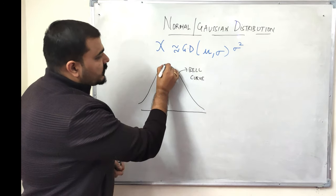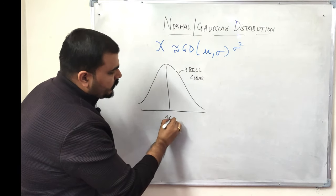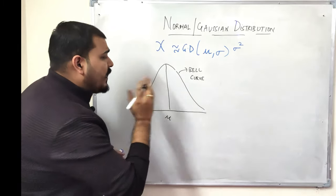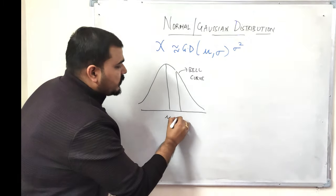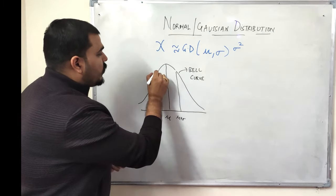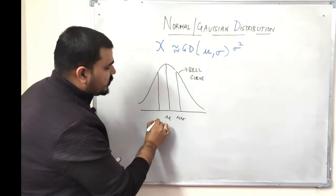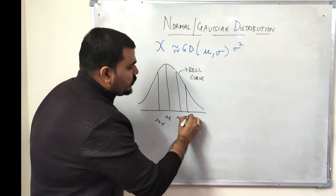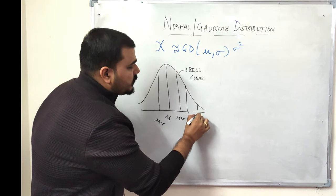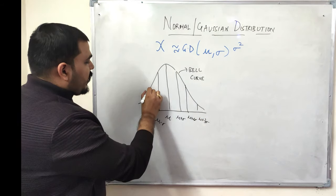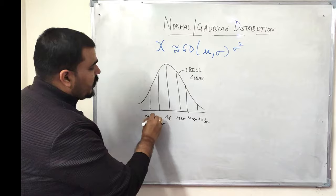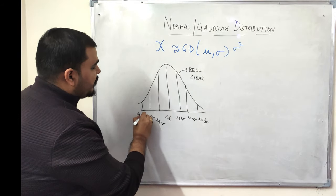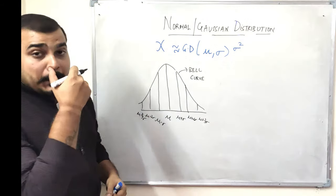Inside this curve, the central point is my median. If I go one position to the right this is mu plus sigma, if I go one position to the left this is mu minus sigma. Similarly, one more position to the right is mu plus 2 sigma, this is mu plus 3 sigma. If I go to the left, mu minus 2 sigma and mu minus 3 sigma.